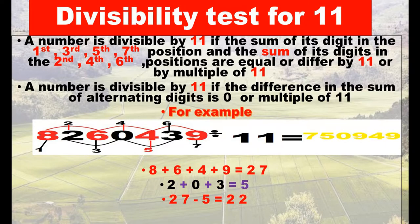Divisibility test for eleven: a number is divisible by 11 if the sum of digits in the first, third, fifth, and seventh positions and the sum of digits in the second, fourth, and sixth positions are equal or differ by 11 or a multiple of 11. Alternatively, a number is divisible by 11 if the difference in the sum of alternating digits is 0 or a multiple of 11.